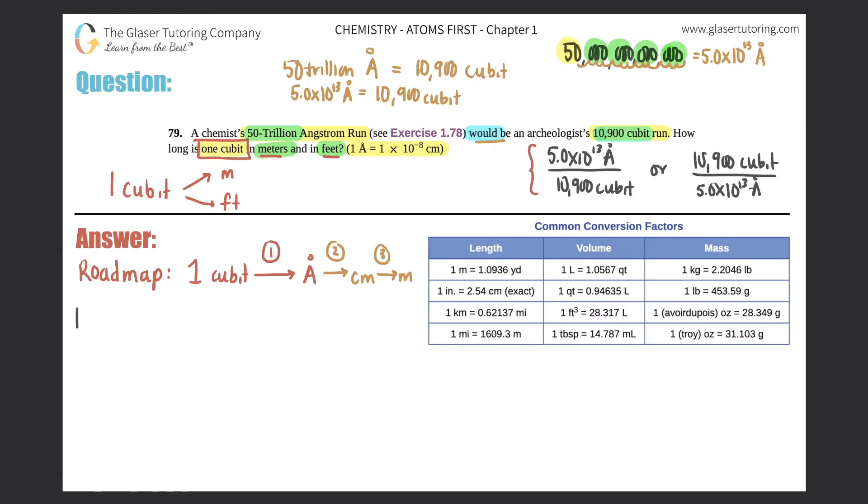So let's check it out. One cubit - I don't want cubit anymore, so times by ratio: cubit goes on the bottom, angstrom goes up on top. And from the one that we just did, 5.0 times 10 to the 13th angstrom is equal to 10,900 cubit. So we could say 5.0 times 10 to the 13th angstrom is equal to 10,900 cubit, so that crosses off and now we're done with part one. So now we can move on. Times by a ratio again - we don't want angstrom anymore, that goes on the bottom and centimeter goes up on the top. And we're using this conversion factor: one angstrom equals 1 times 10 to the negative 8th centimeters.